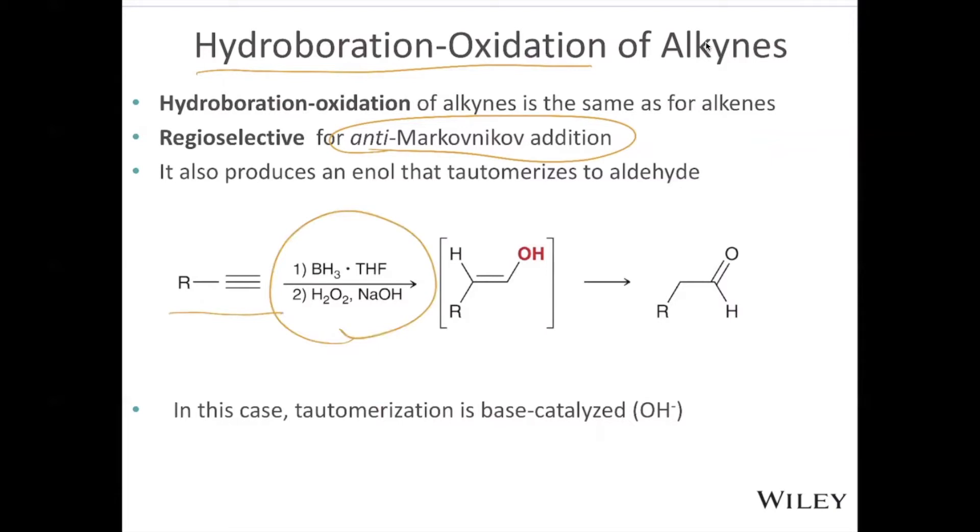We have our alkyne. Here's the reagents that we need. And the first step of this reaction, we have BH3 and THF. And then we have in our second step, hydrogen peroxide in base. That allows us to create the non-Markovnikov addition of an alcohol. Our OH goes on the carbon with the most Hs, and our H goes on the carbon with the most carbons. So that's non-Markovnikov. But then this quickly tautomerizes to make the aldehyde. Because there is base in the second step, this tautomerization is catalyzed by base.